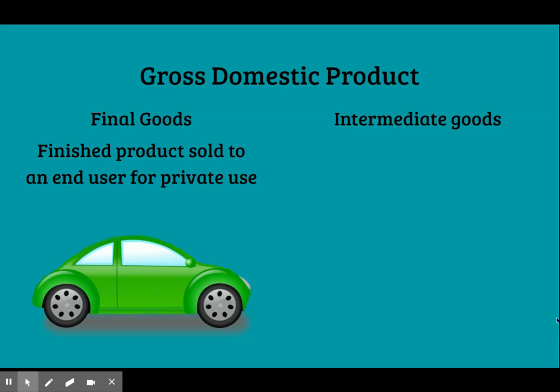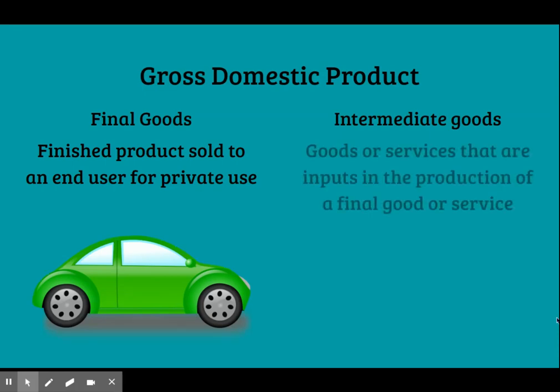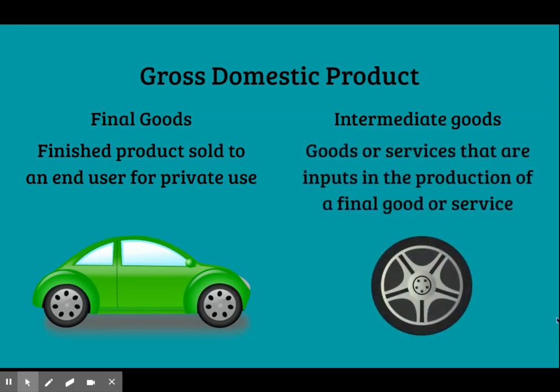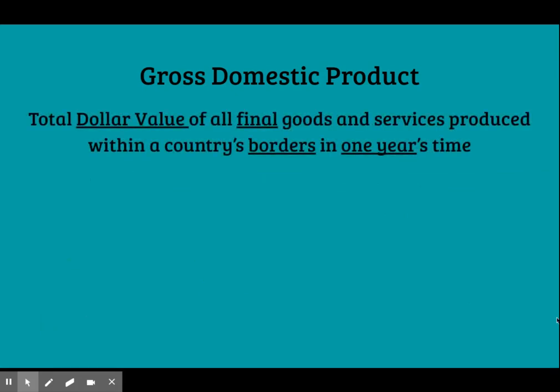An intermediate good, on the other hand, is not a final finished product. It's an input in the production of a final good or service, like tires or glass that's purchased by a car manufacturer and used to produce cars that they will then sell. Now, let's get on to the definition of GDP. GDP is the total dollar value of all new, final goods and services produced within a country's border in one year's time.